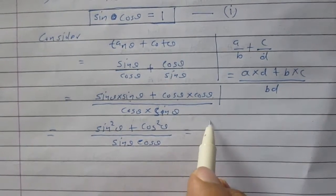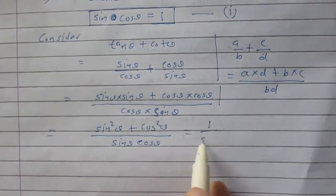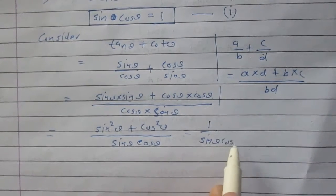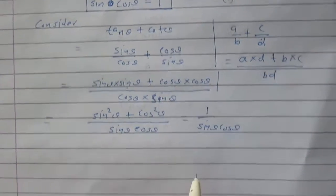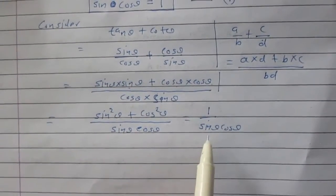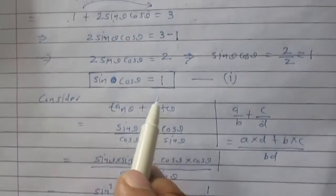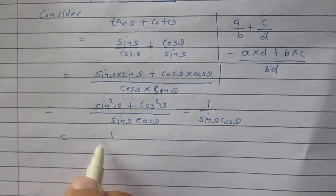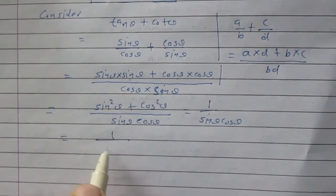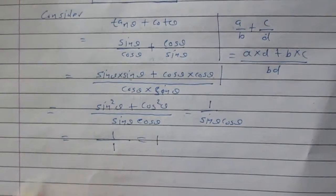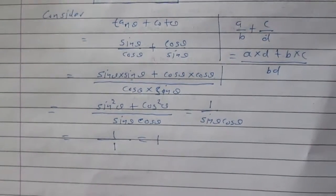The numerator is sin²theta plus cos²theta, which equals 1, and the denominator is sin theta cos theta. The value of sin theta cos theta is 1. So after substituting the values, we get 1 over 1, and the result is 1. Hence proved.